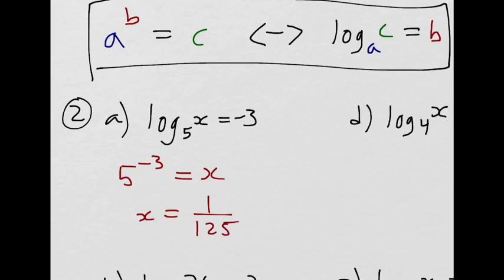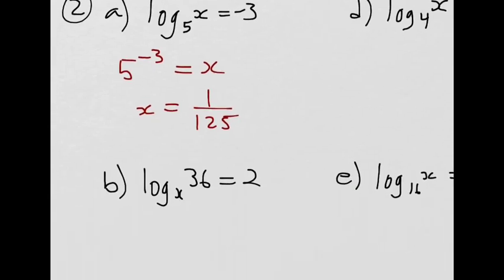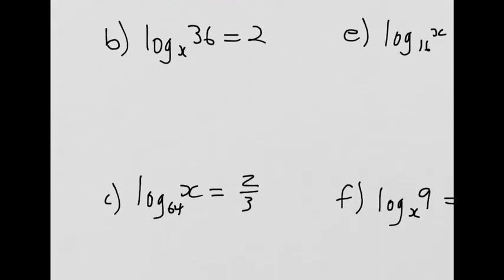Right, 5 to the 3 is 125. And if I make it negative 3, that reciprocates it and writes it underneath the fraction, in the denominator. There we go.